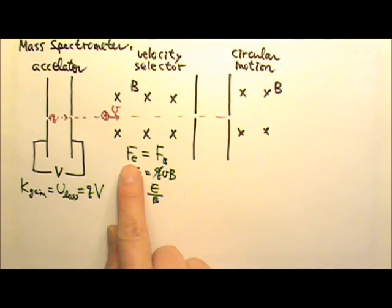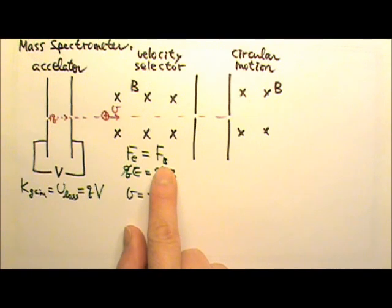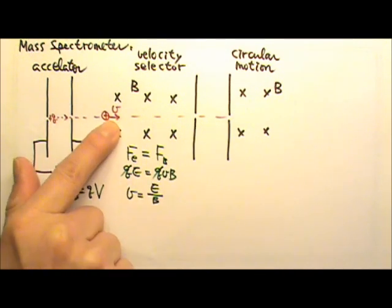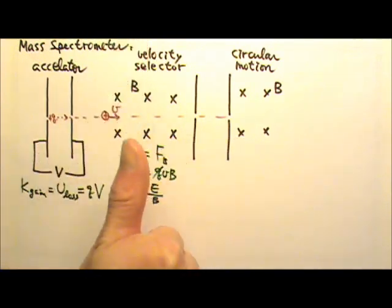We also need the electric force to be opposite to the magnetic force. The magnetic force on this charge would be V cross B up that way.